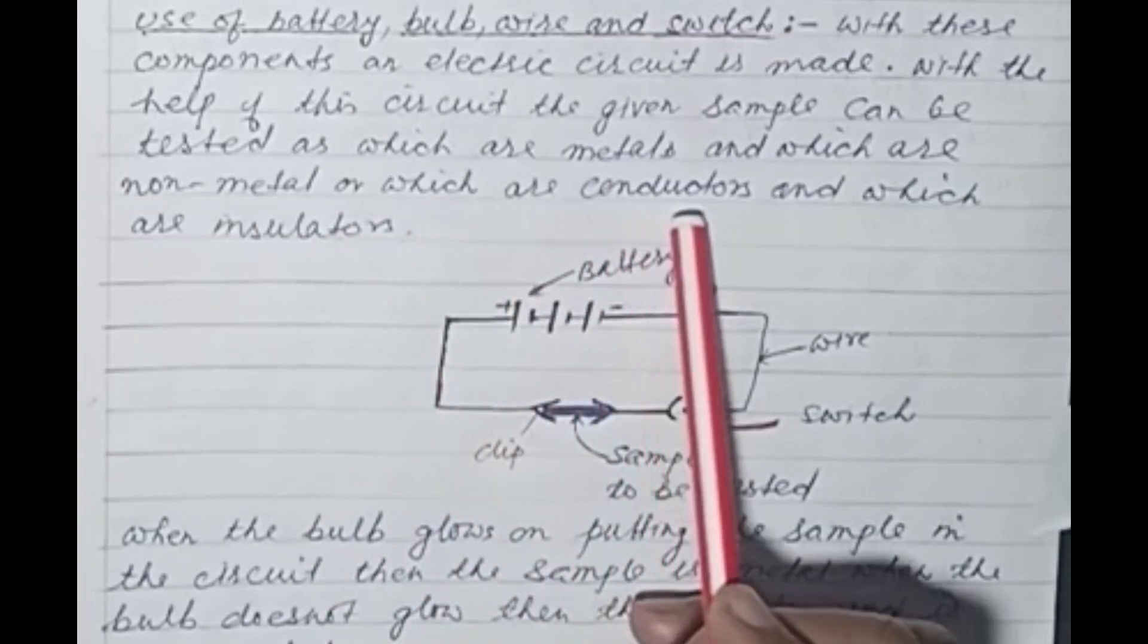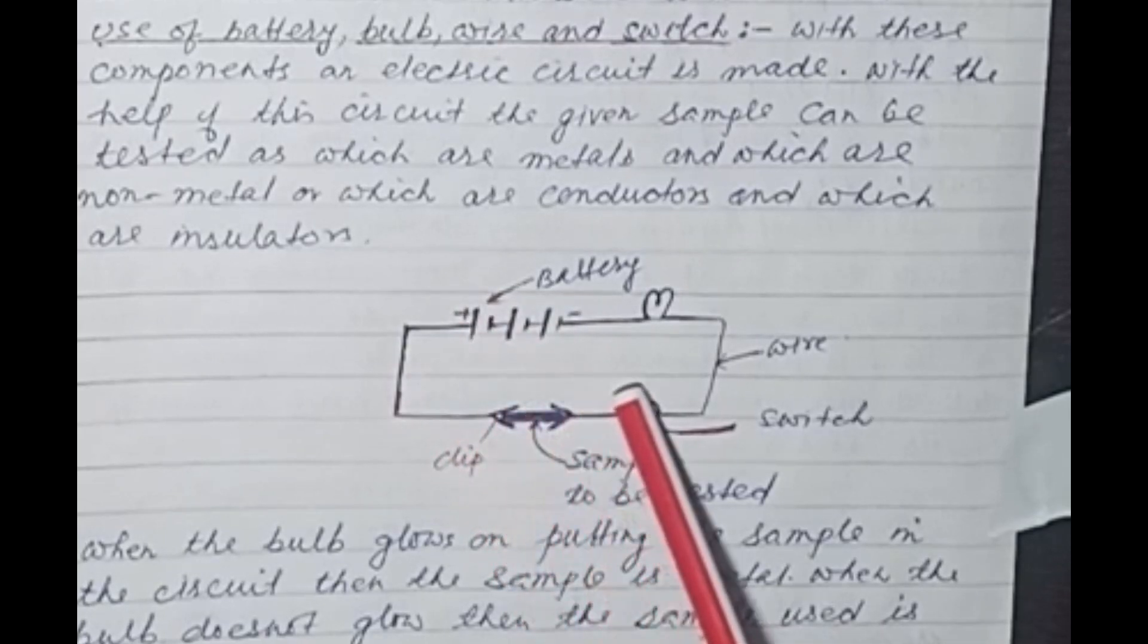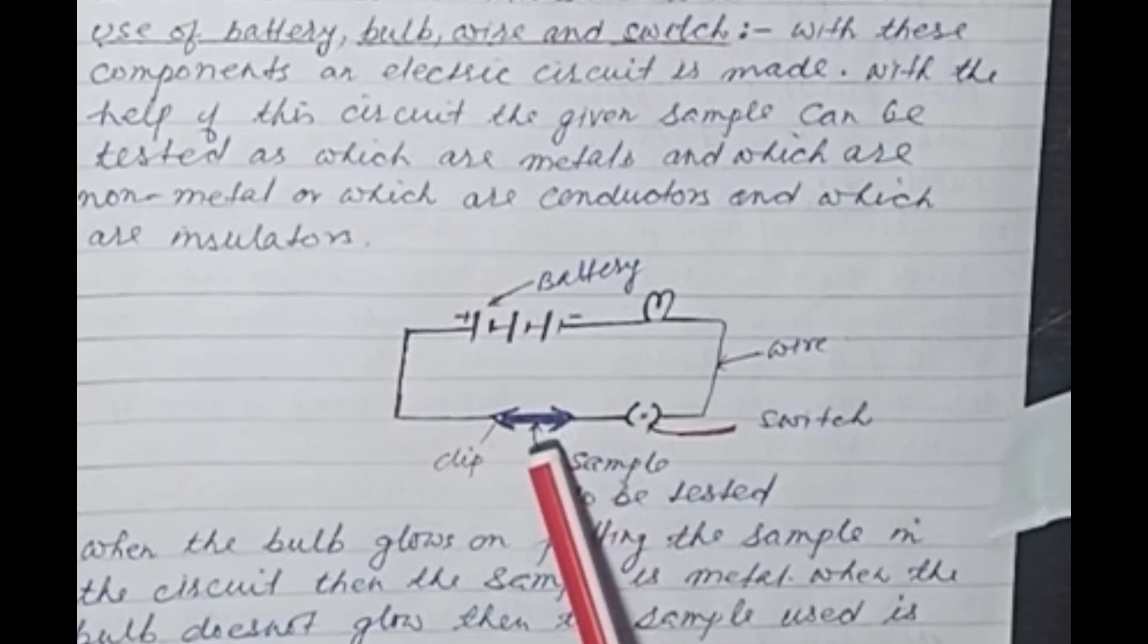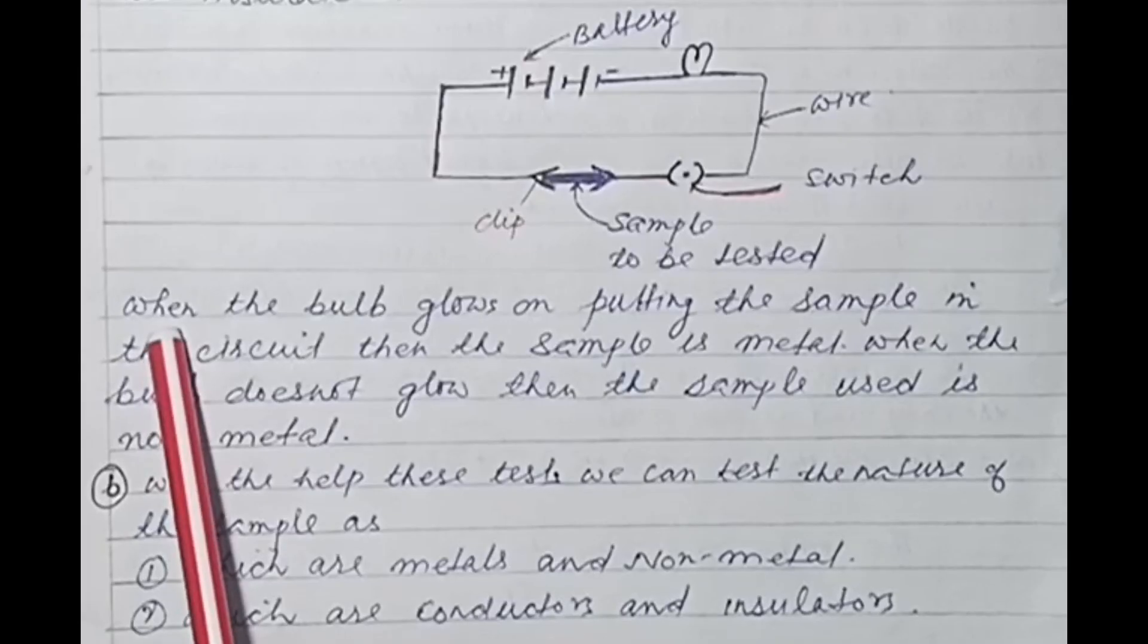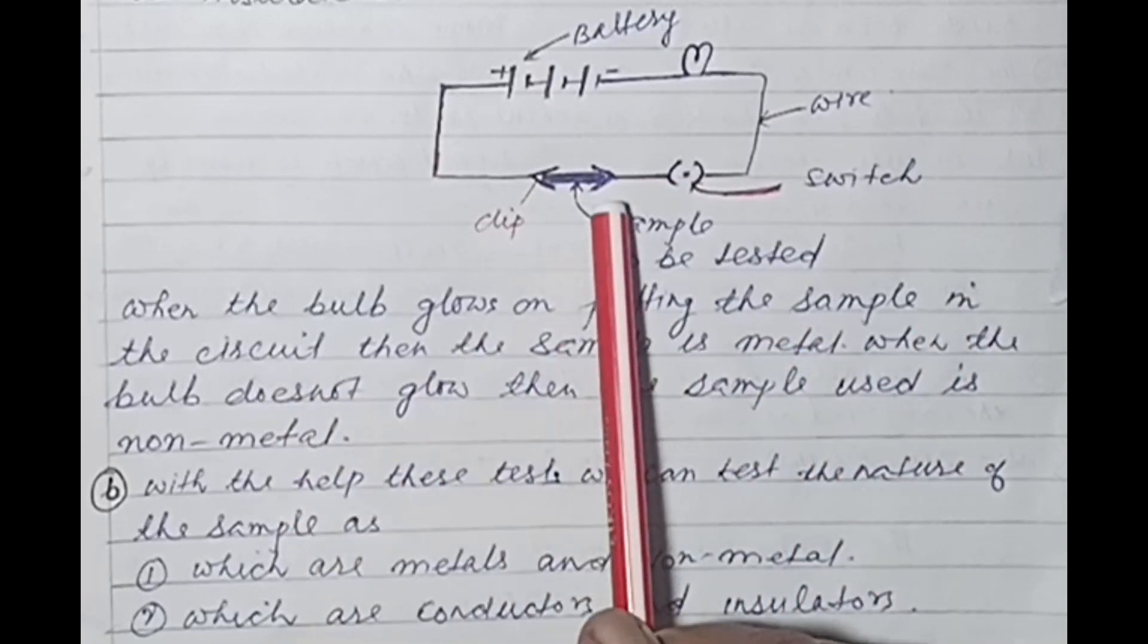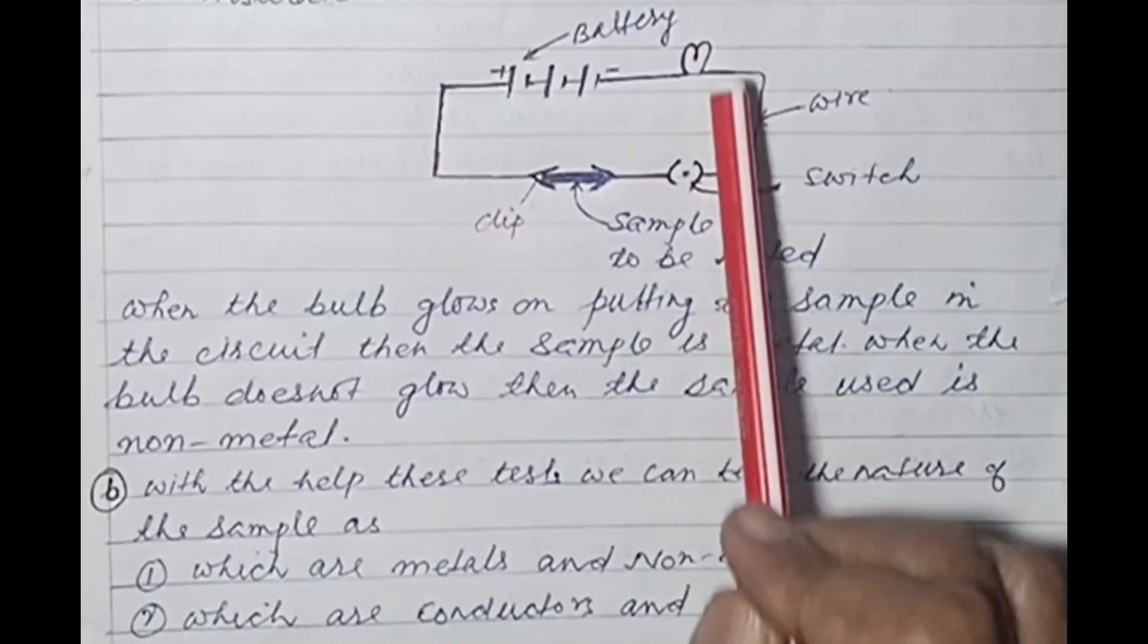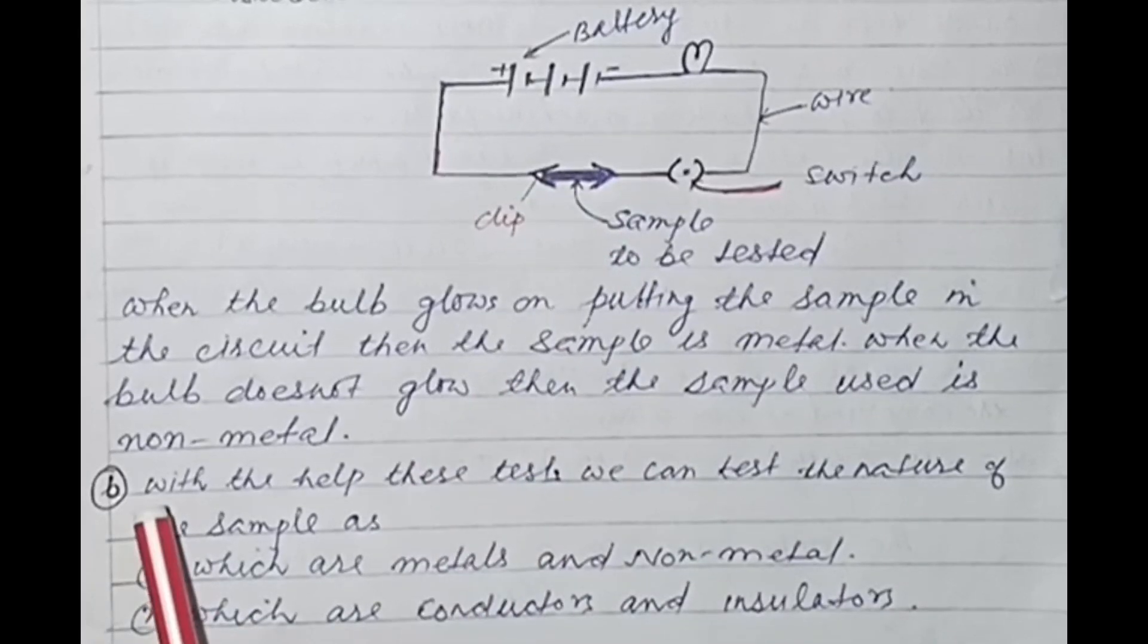Children, this is an electric circuit consisting of battery, wire, switch and in this circuit, sample is placed to be tested. When the bulb glows on putting the sample in the circuit, then the sample is metal. When the bulb does not glow, then the sample used is non-metal.